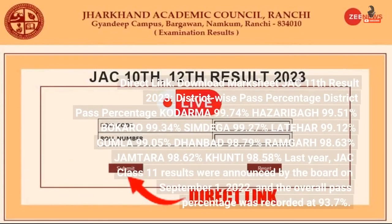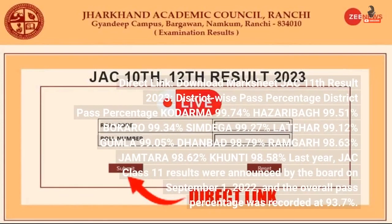Direct link — download Marksheet JAC 11th result 2023. District-wise Pass Percentage: Koderma 99.74%, Hazaribagh 99.51%, Bokaro 99.34%, Simdega 99.27%, Latehar 99.12%, Gumla 99.5%, Dhanbad 98.79%, Ramgarh 98.63%, Jamtara 98.62%, Khunti 98.58%.